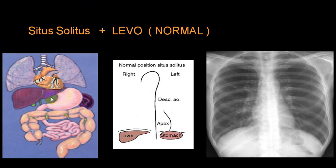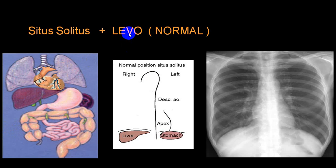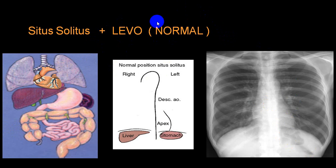In situs solitus you can see normal position of abdominal viscera: liver on the right side, stomach on the left side, spleen on the left side, ileocecal junction and appendix on the right side. This is situs solitus and the heart position is normal — levocardia with situs solitus. In this normal condition, the chance of congenital heart disease is only three to five percent.